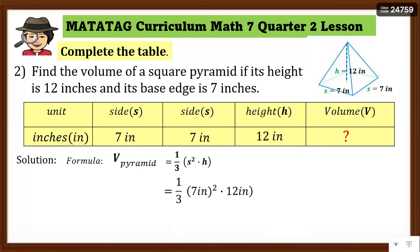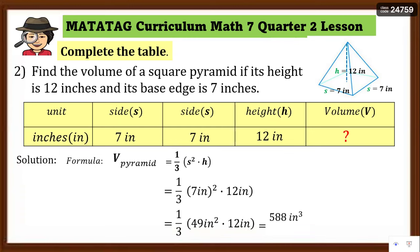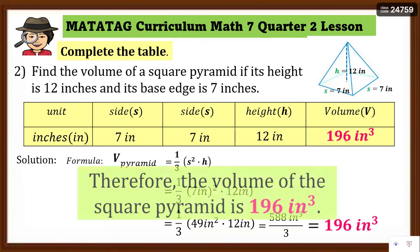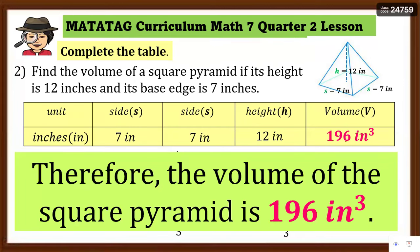Substitute side = 7 inches, height = 12 inches. Don't forget the exponent for the square. Square 7 inches: 7 × 7 = 49 square inches. Copy 12 inches and bring down one-third. Multiply 49 square inches × 12 inches = 588 cubic inches. Divide by 3: 588 ÷ 3 = 196 cubic inches. Therefore, the volume of the square pyramid is 196 cubic inches.